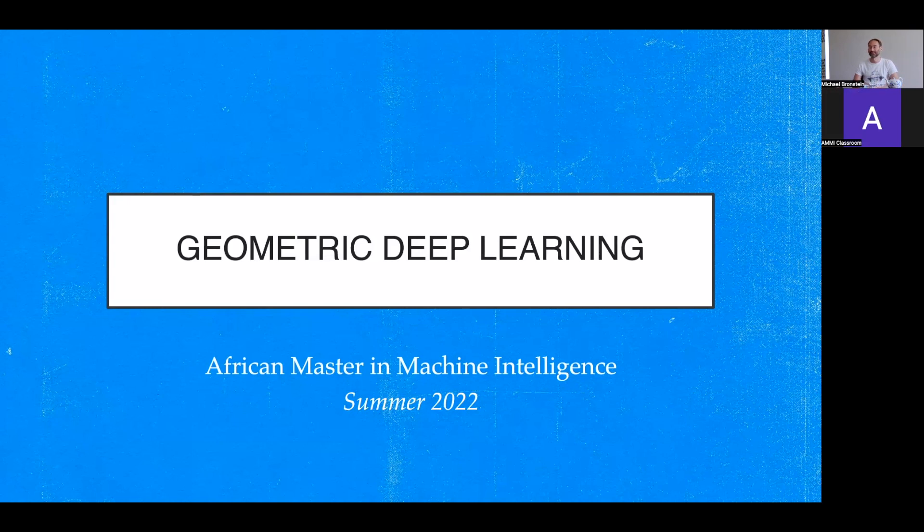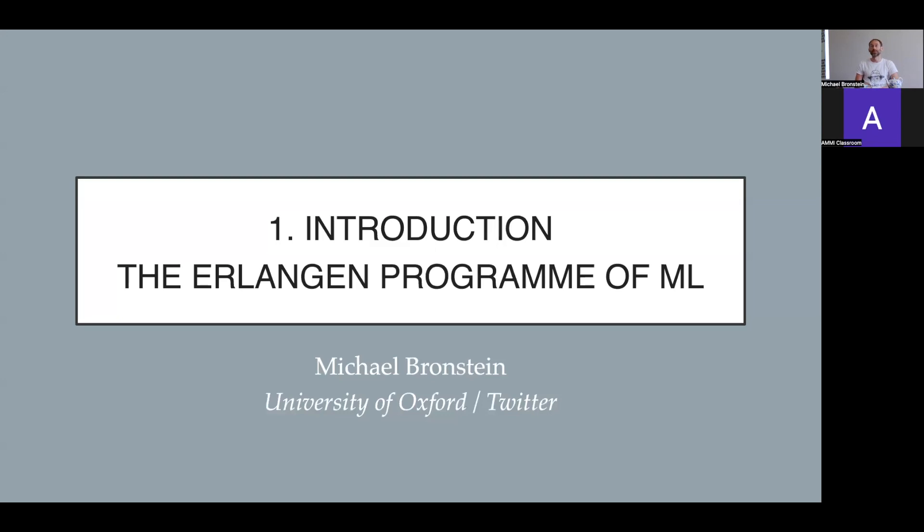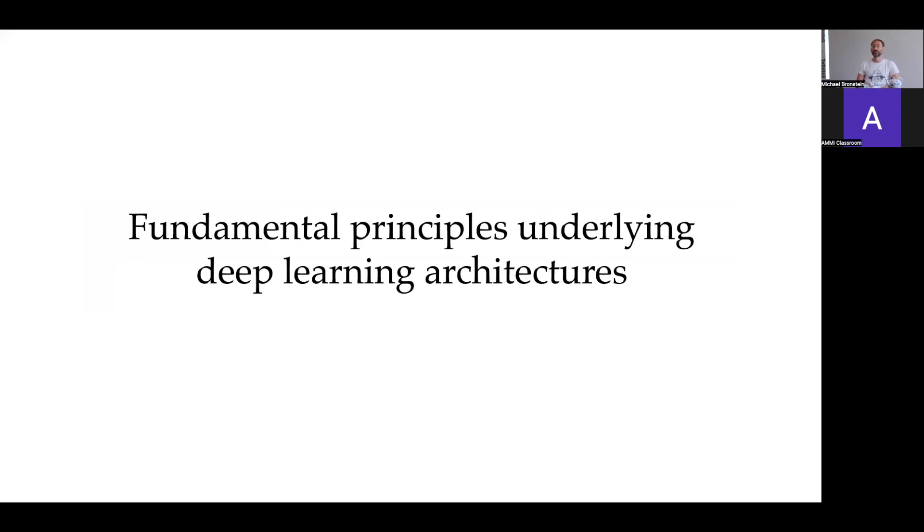I'm glad to be back to this program. This will be the second iteration of our course on Geometric Deep Learning that we taught in AMMI last year. It will be taught by myself with my colleagues Joan Bruna from NYU, Taco Cohen from Qualcomm, and Petr Veličković from DeepMind. I'll start with the introduction I call the Erlangen Program of Machine Learning. The fundamental principles that underlie deep representation learning and modern deep neural network architectures can be summarized in one single word: symmetry.